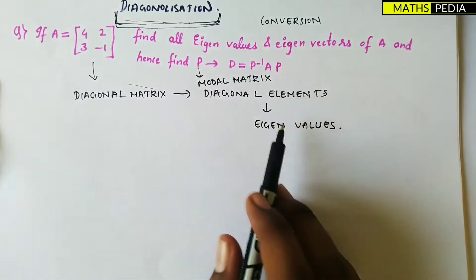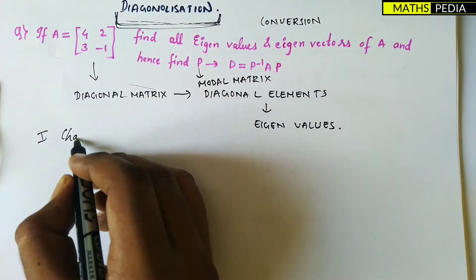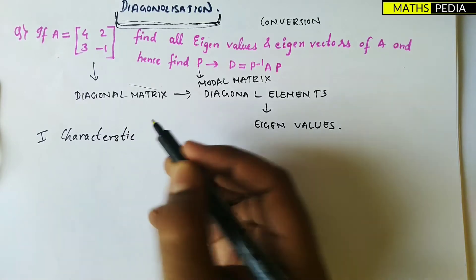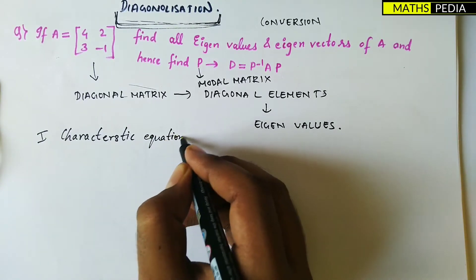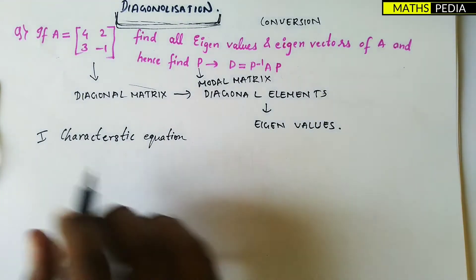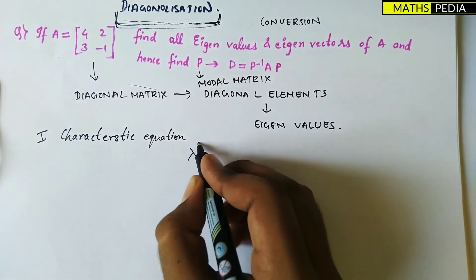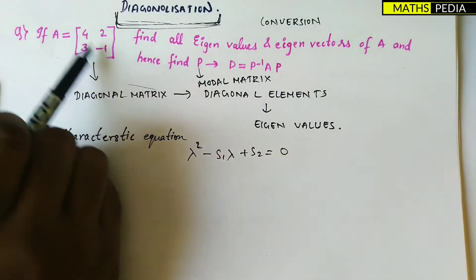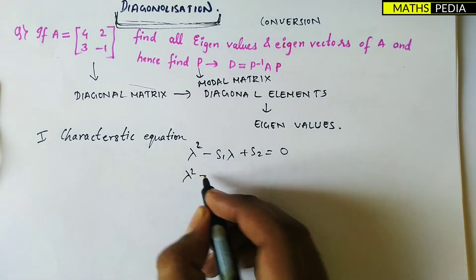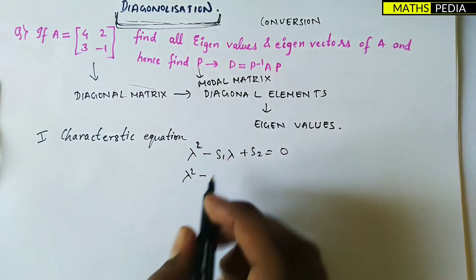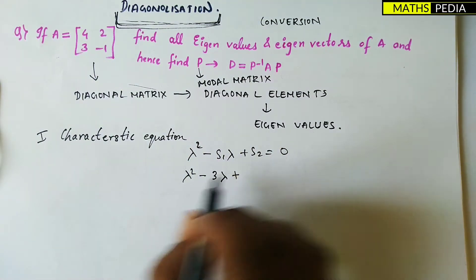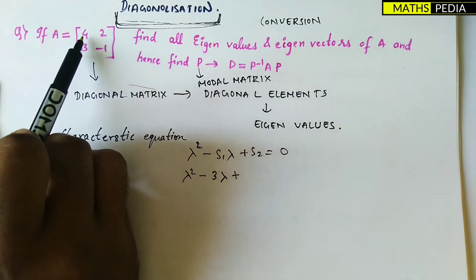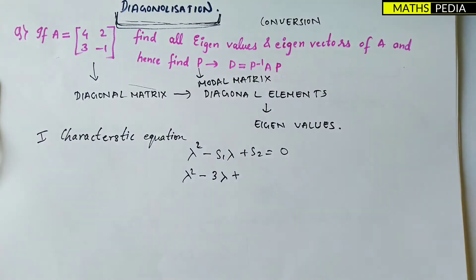The first step is to find the characteristic equation. We use the formula: λ² − S₁λ + S₂ = 0, where S₁ is the trace — the sum of the main diagonal elements. Here 4 + (−1) = 3, so we have −3λ. S₂ is the determinant: 4×(−1) − 3×2 = −4 − 6 = −10, but placing it gives us +10.